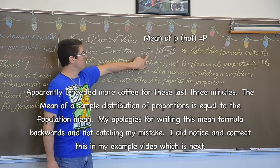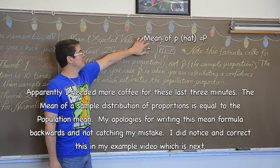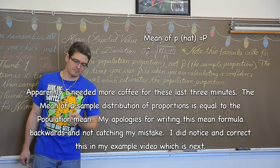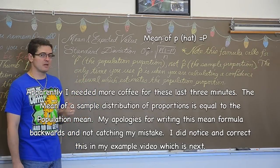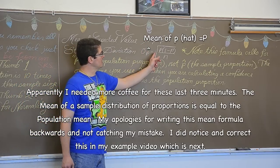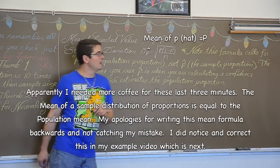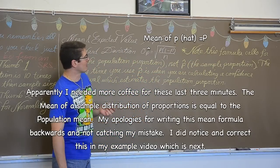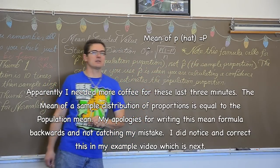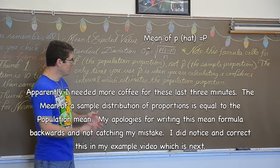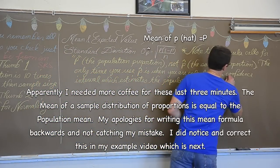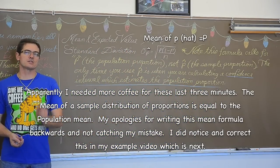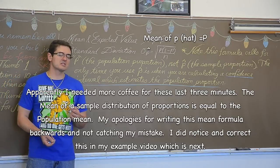Capital P is population proportion, p-hat is the sample proportion. And the standard deviation of a proportion, and notice we are using mu and sigma. We always use mu and sigma when calculating mean and standard deviation of a proportion. That is going to change a little bit when we work with means. So just be aware of that. But we are not right now, so mu of p-hat is equal to the square root of p times one minus p over n. Now note, this formula calls for p, the population proportion, not p-hat, the sample proportion. The only time you are using p-hat is when you are calculating a confidence interval to estimate the population proportion.